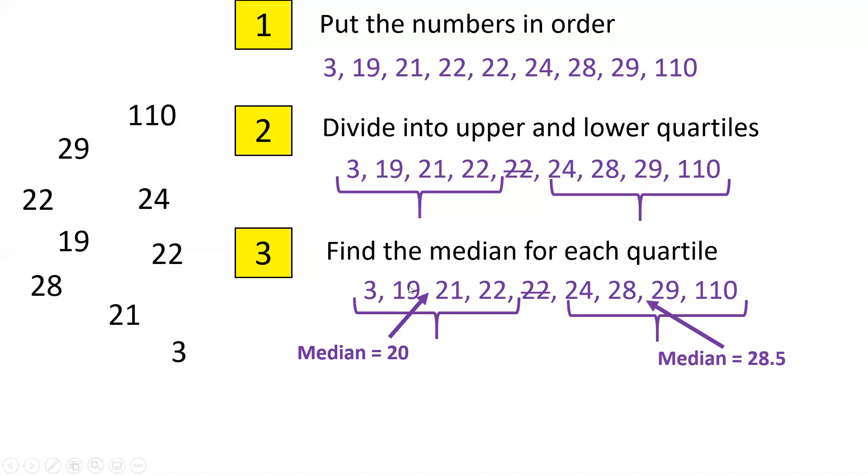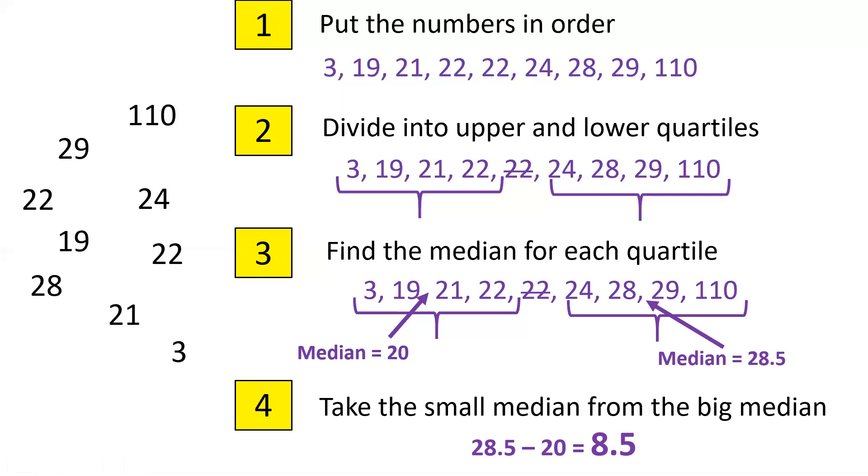Now if you can't work out the middle number, supposing there's a big gap between these two, you simply add these two numbers together and divide by two. And finally you take the smaller median, this one here for the lower quartile, away from the bigger median, so we simply do 28.5 take away 20 and the interquartile range is therefore 8.5.